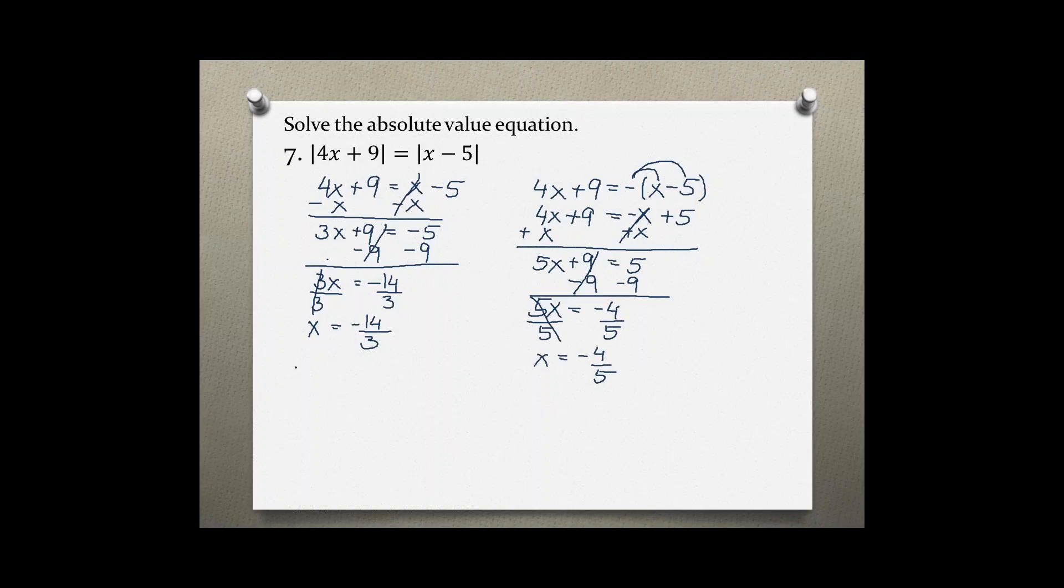Now remember we always need to check if our values actually make sense, meaning to give us a true statement. Starting with this first solution, plugging it into the original equation, we get 4 times negative 14 over 3 plus 9, which equals, again plugging negative 14 over 3 in for x, minus 5, inside absolute value bars.